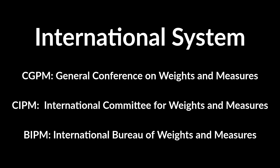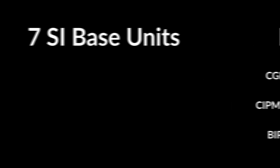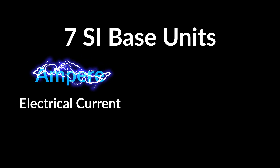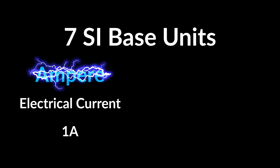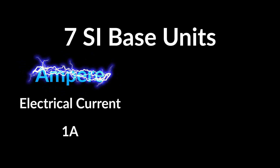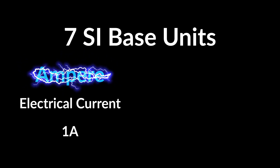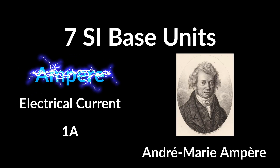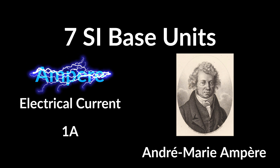The metric system is controlled by a few groups that define the standards and what the units mean. There are seven different base units. First: ampere, for electrical current — you may have heard of 'amps' from your mobile phone charger. It's named after the famous mathematician and physicist André-Marie Ampère, who is considered the father of electromagnetism.